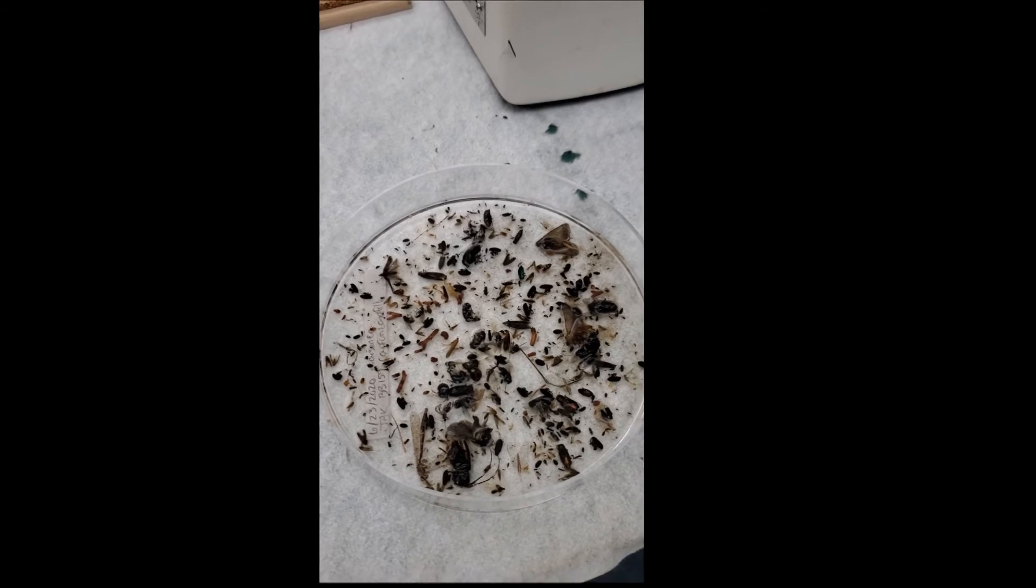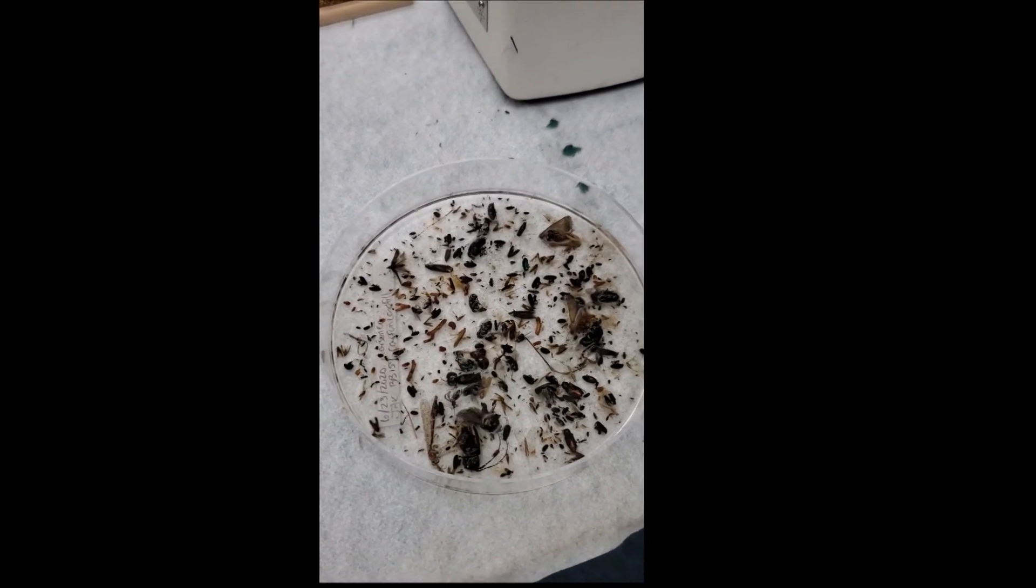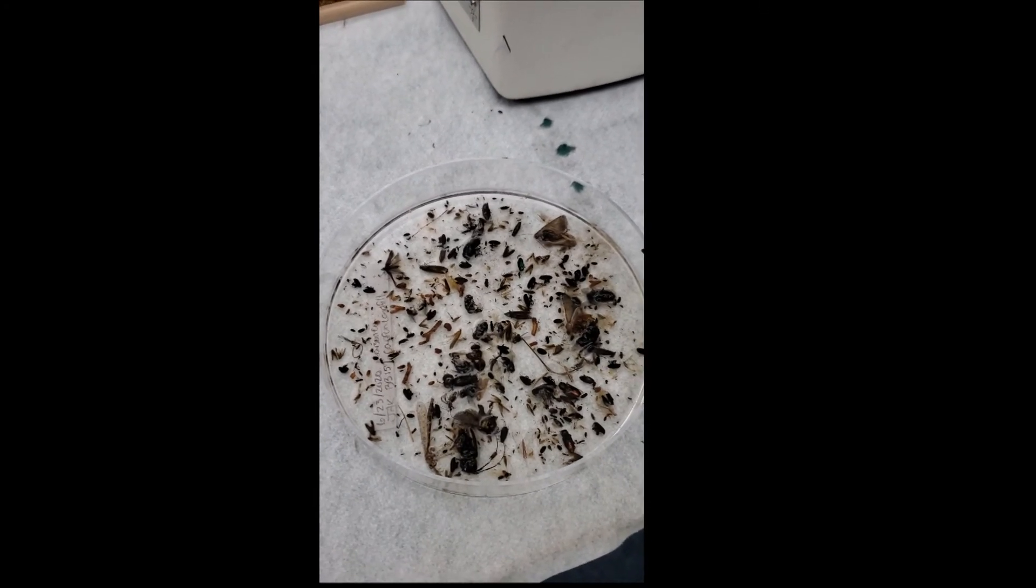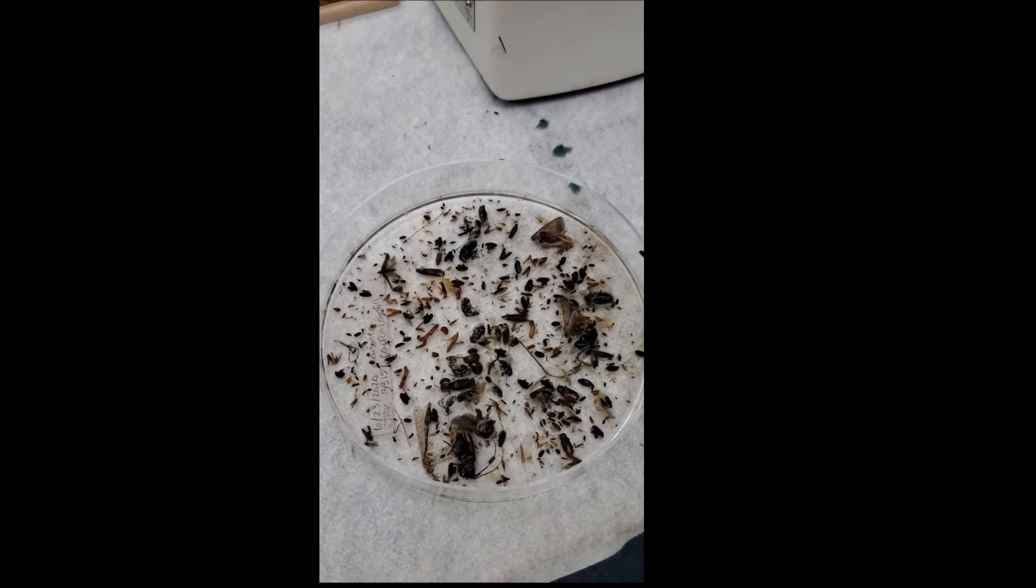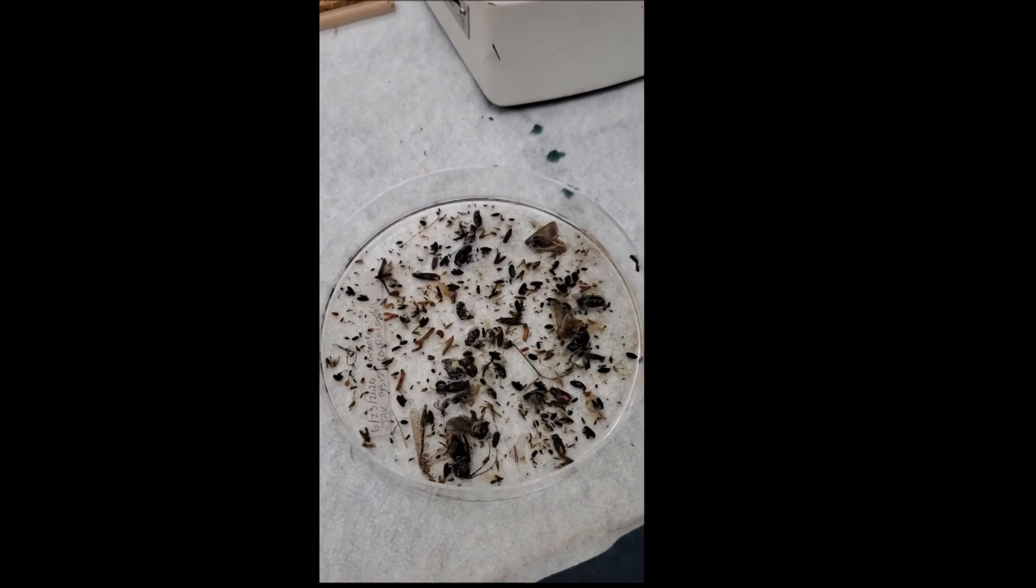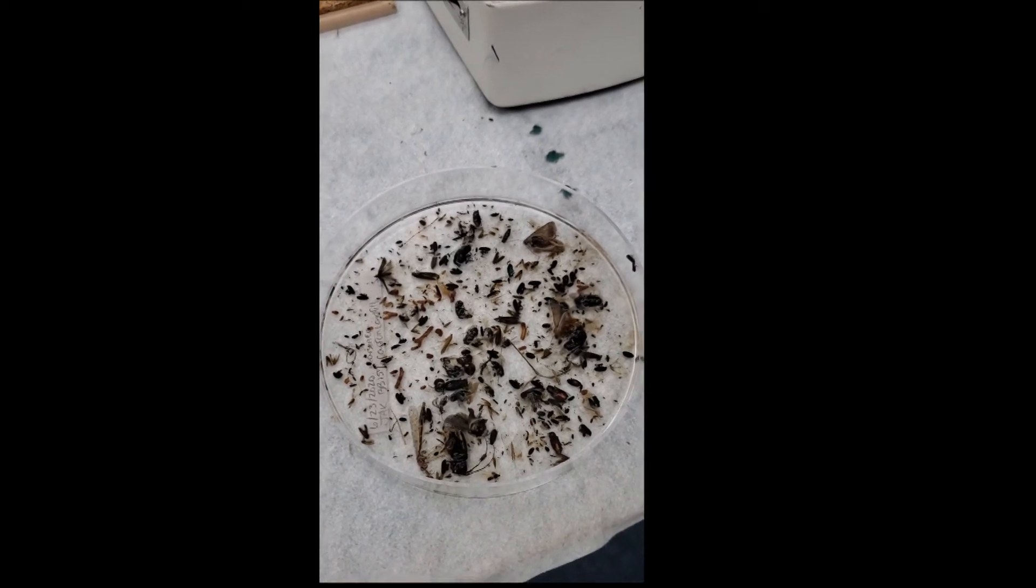This is a sample from a bark beetle trap. You can see that there's hundreds of insects in here. We have to go through and look through the material and see if there's any of the species or the insects that we're worried about, and sort those out and identify them.